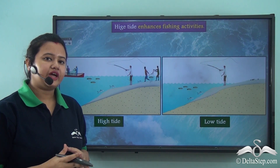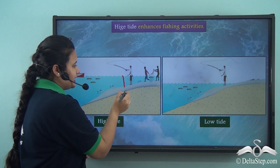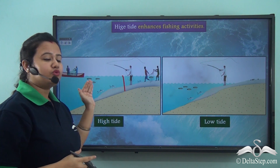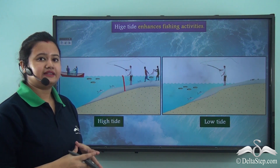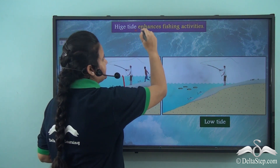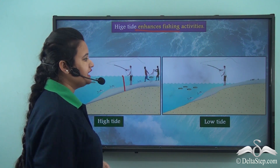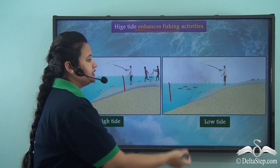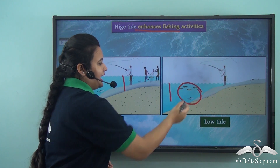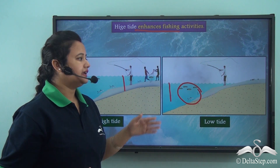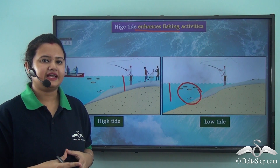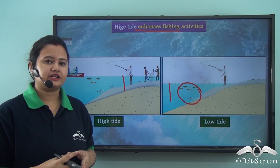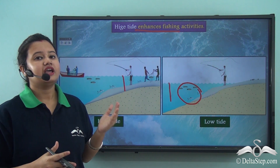During high tide, the water level rises significantly, allowing ships to move up to the shore, which enhances fishing activities. Whereas during low tide, the water level decreases and ships remain in deep oceans, so fishers do not get a good catch. Thus, high tide helps in fishing, which is an important economic activity especially in coastal regions.